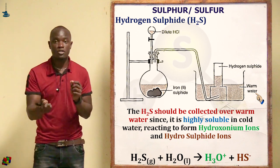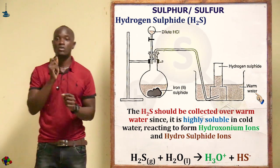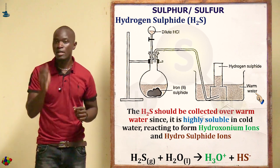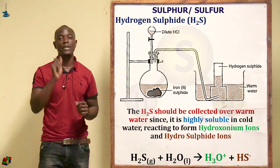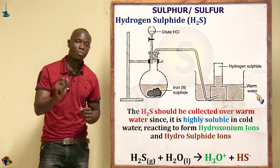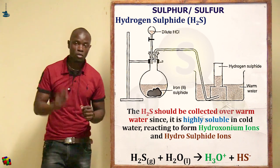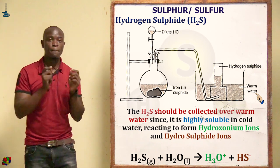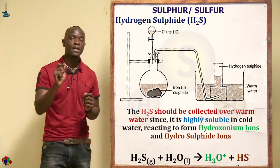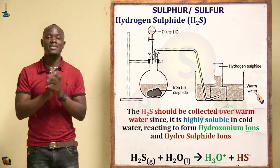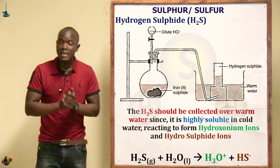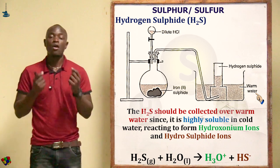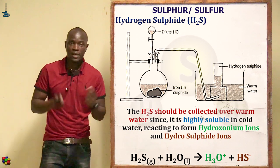You should take note in an exam or question that this water is labeled as warm, because hydrogen sulfide is highly soluble in cold water but not in warm water. The collection method is the over warm water method — if asked to name the collection method, be specific and say it is collected using the over warm water method.